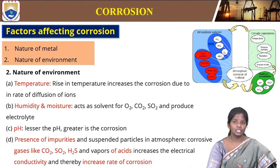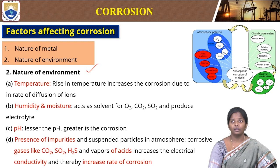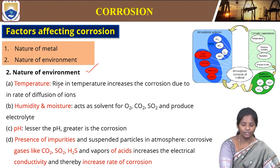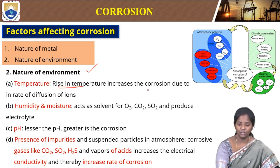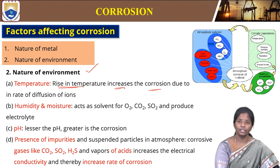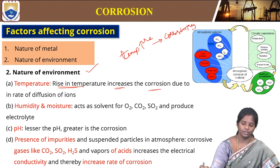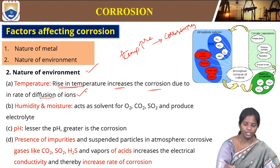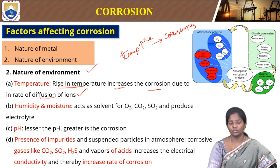In continuation, we will see the effect of nature of environment. Nature of environment is also very crucial to understand. With increase in temperature, the corrosion increases due to the rate of diffusion of ions — because the rate of diffusion of ions increases, so the corrosion also increases.